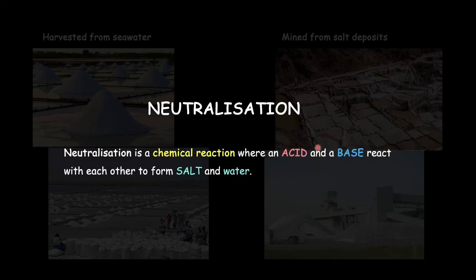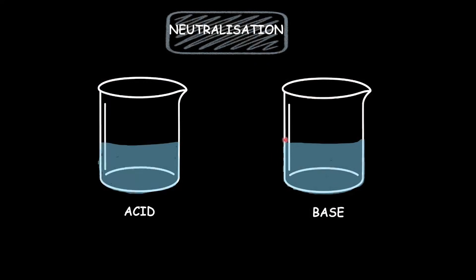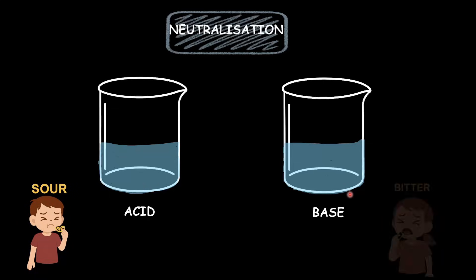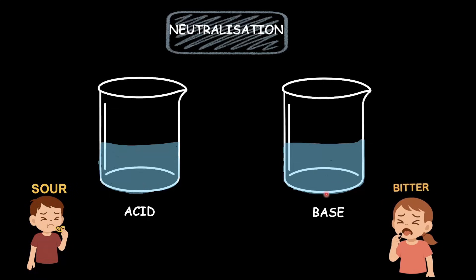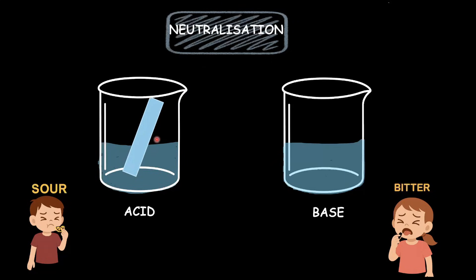Before we go any further, let's take a short recap on the properties of these reacting species — the acid and the base. Acids are sour in taste, and bases are bitter in taste. We also know that when we place a blue litmus paper in an acid or an acidic solution, it would turn red. And bases would do the exact opposite — when you place a red litmus paper in a base or a basic solution, it would turn blue.